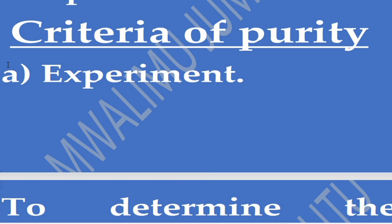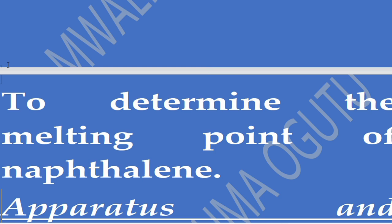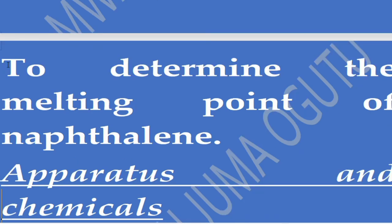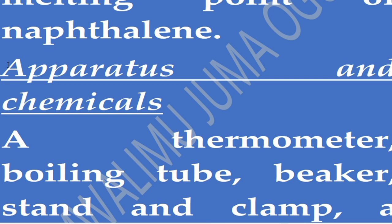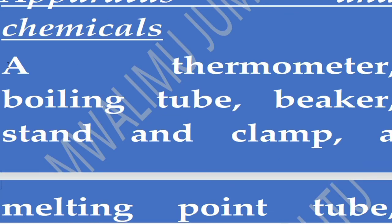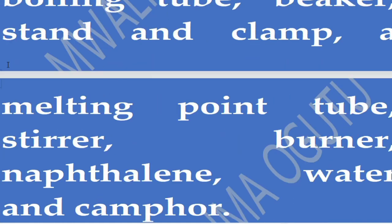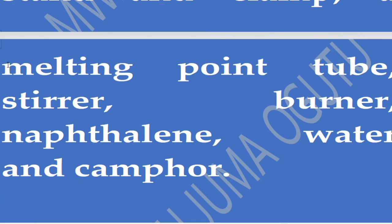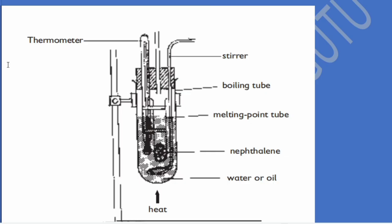We have an experiment to determine the melting point of naphthalene. We expect naphthalene to melt at 80 degrees. When it melts lower than 80 degrees, it has an impurity and is not pure. The apparatus and chemicals required are: a thermometer, a boiling tube, a beaker, a retort stand slab, a melting point tube, a stirrer, a burner, naphthalene, water, and camphor.